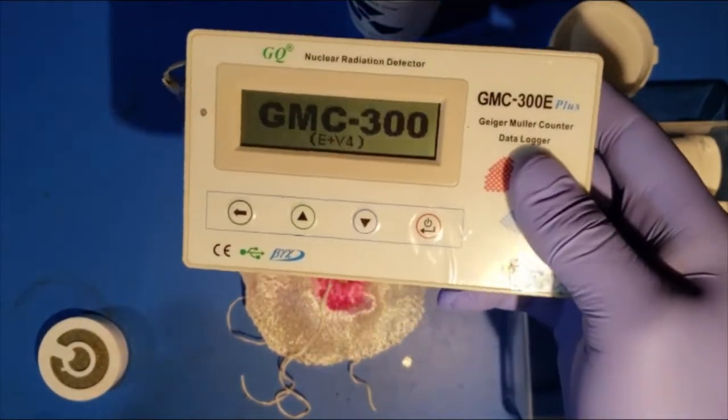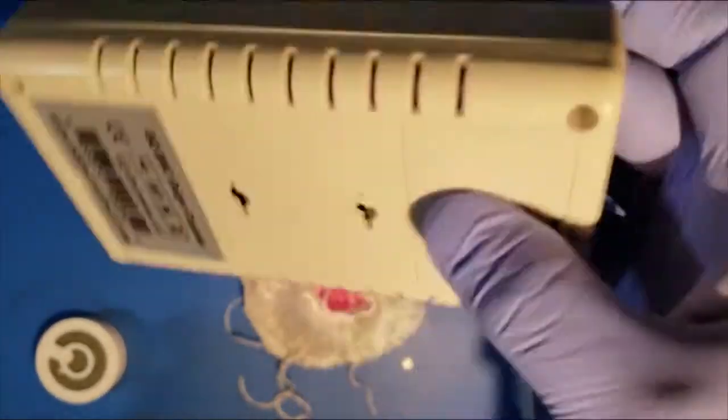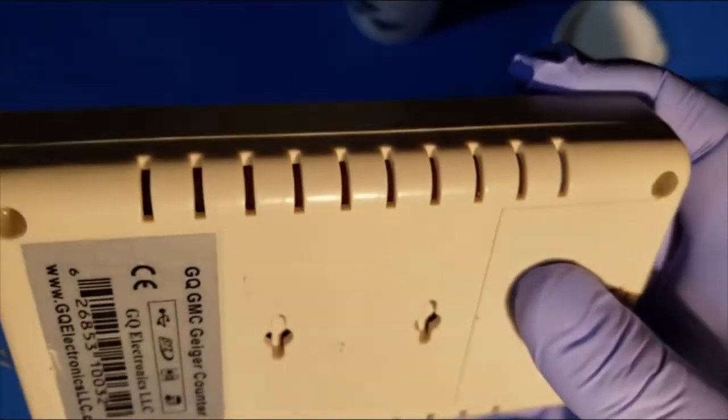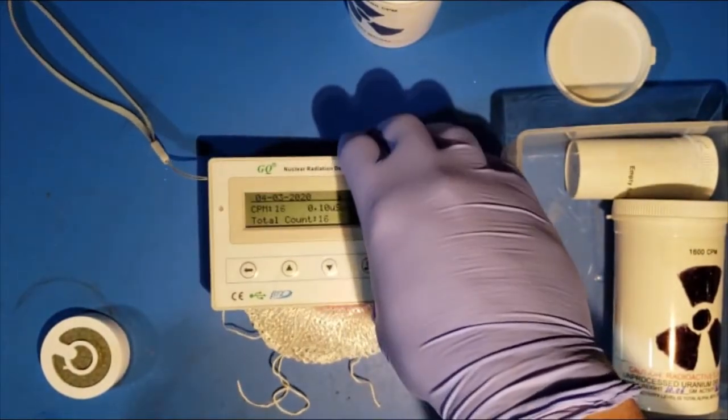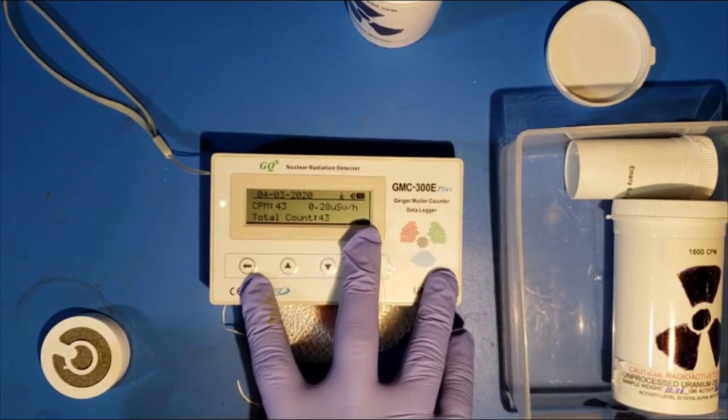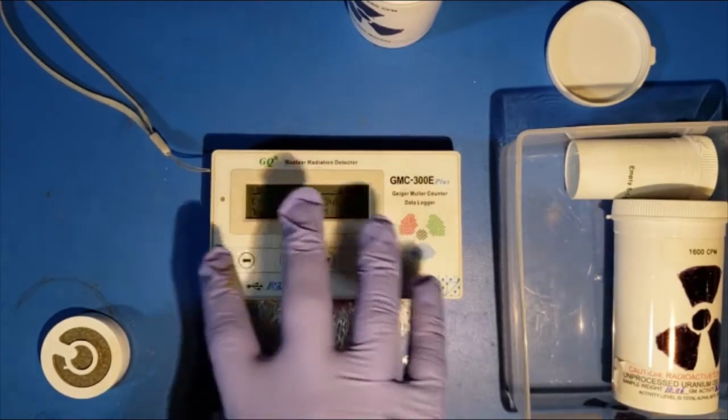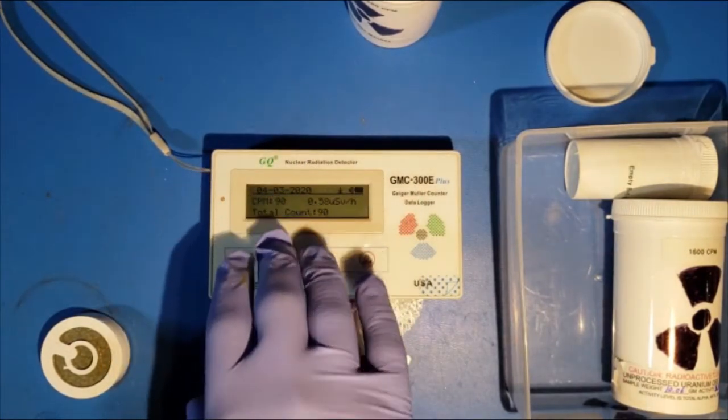So, got this guy on Amazon for like a hundred bucks. Has a tube in this side right here, and I'm just gonna put the tube right on the thorium lamp mantles. And over the course of about a minute, we're gonna get a reading here for how radioactive these are.